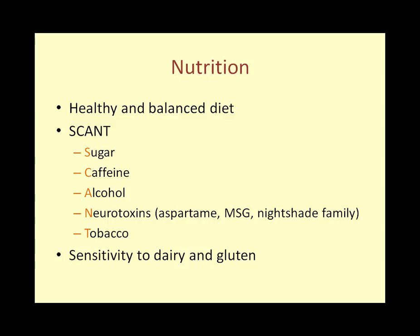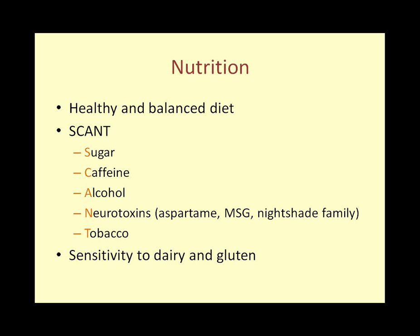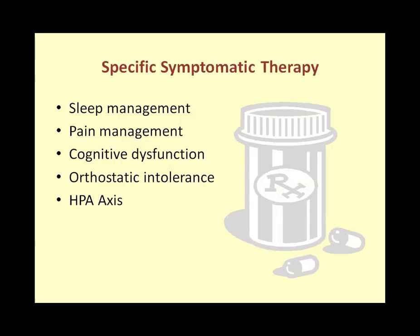The goal is to reduce intake of SCANT products, but not necessarily avoid them altogether. Small amounts of sugar, caffeine, or even alcohol occasionally are not a problem — it's overuse that is concerning. Many patients are also intolerant of dairy products and wheat or gluten. If suffering from abdominal complaints, try avoiding both dairy and wheat for four to five days to see if it makes a difference.